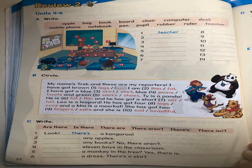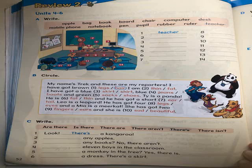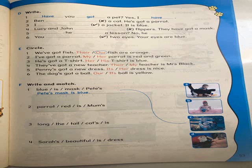Number 4: '11 boys in the classroom.' The answer is 'there are' because 'boys' has a plural S. Number 5: 'a monkey in the tree.' Here it's going to be a question — we know that because of the question mark. So it has to be 'is there a monkey in the tree?' Number 6: 'a dress / there is a skirt.' We choose 'there isn't a dress' because it's only one dress — we know that because we have 'a dress'.